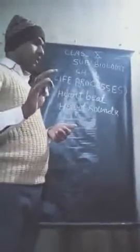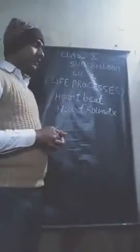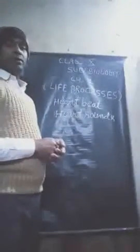In one full heartbeat: systole of the auricle takes 0.15 seconds, systole of the ventricle takes 0.30 seconds, and all chambers in the relax state take 0.40 seconds, giving a total time of 0.85 seconds for the heartbeat.